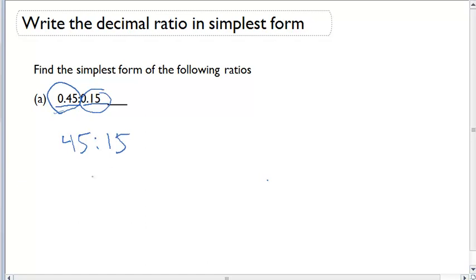Now that my ratio is in whole numbers, now I can simplify it. Are both of these numbers divisible by a common factor? Yes they are. I'm going to divide both by 15 and I'm going to get my new ratio of 3 to 1.